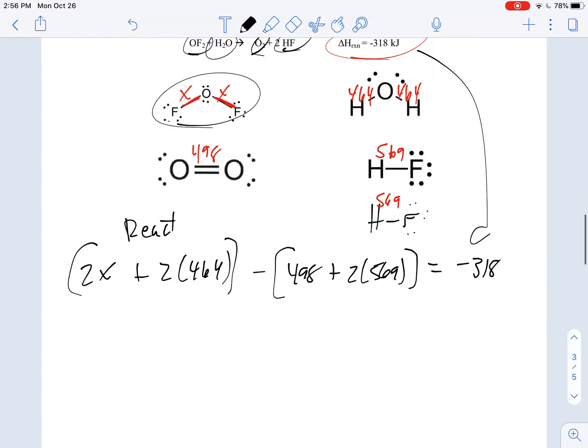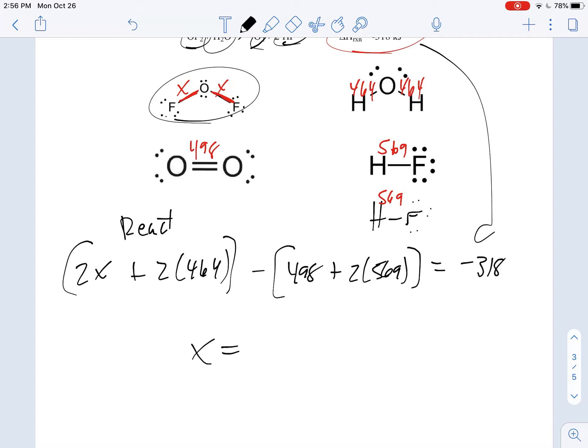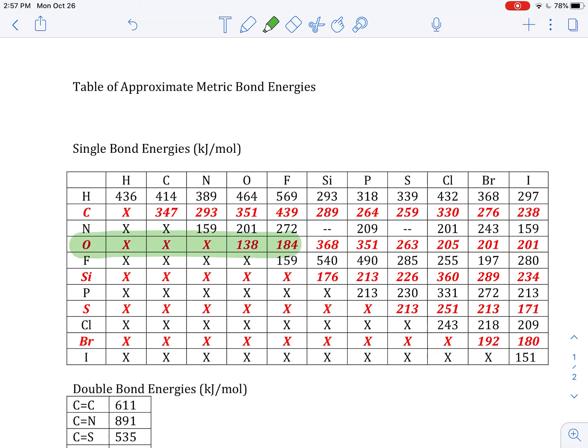So assuming I have done my math correctly, after you go through and solve for X on all of this I end up with X being about 195 kilojoules per mole. Which by the way, if we go back now and double-check our answers, O-F was about 184 on this chart and according to our calculation here it was 195, so in the ballpark.